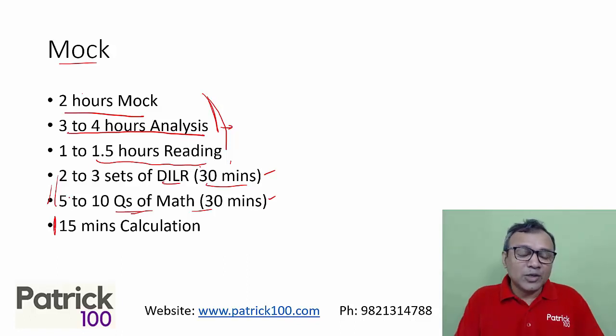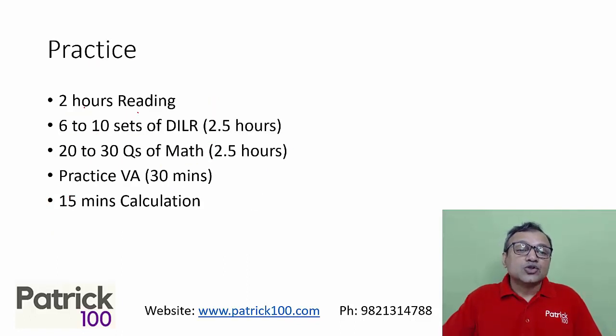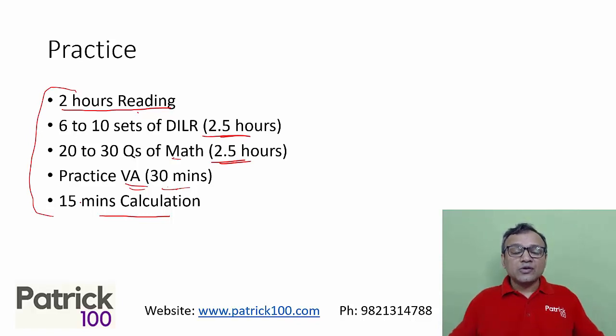For practice days, focus on two hours of reading. Reading is important - the more you read as you come closer to the examination, the better. If you feel weak at verbal, spend more time on reading, maybe three hours. If you're really strong, maybe one hour will suffice. 2.5 hours of DI-LR sets, 2.5 hours of math. You can vary the time - if you're strong in math, spend less time on math and more time on other areas. Practice VA, the jumbles and paras, for 30 minutes and 15 minutes of calculations. Again, scatter the time. Don't do the whole two and a half hours of DI-LR at a stretch - maybe one and a half hours in the morning, one hour in the evening. Same with math - break it throughout the day and prepare accordingly.